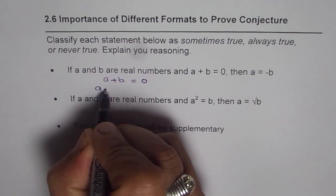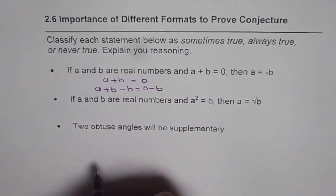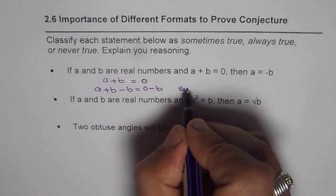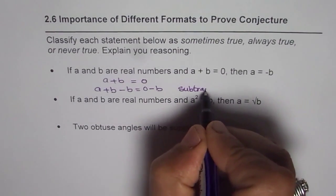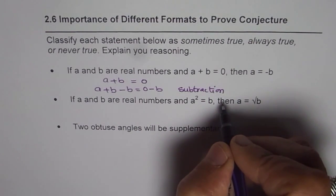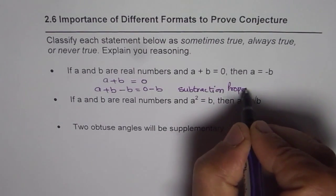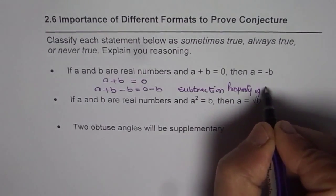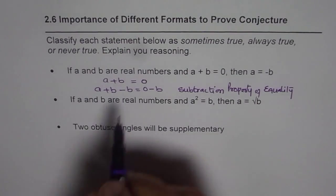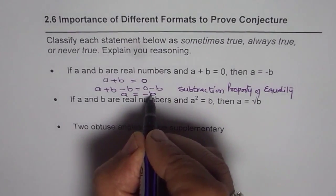Then we will get A plus B minus B equals zero minus B. That step uses the subtraction property of equality. That gives us A equals minus B.